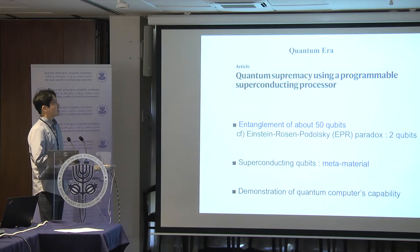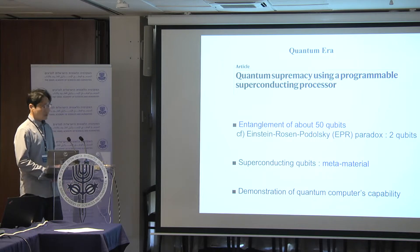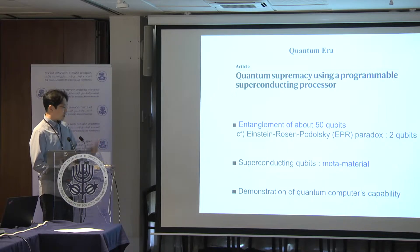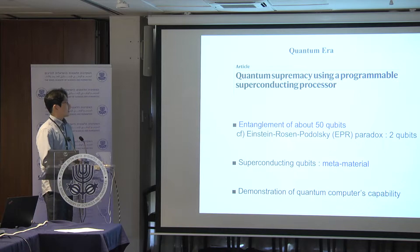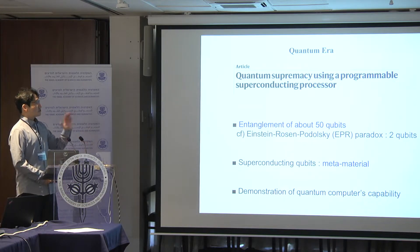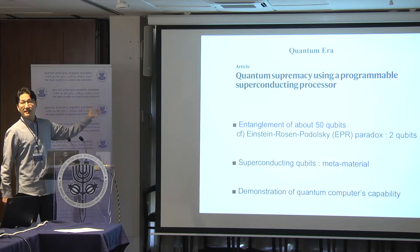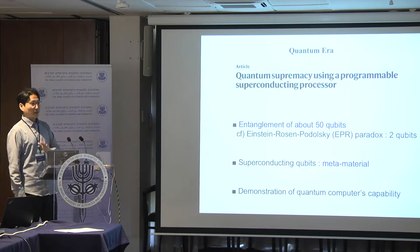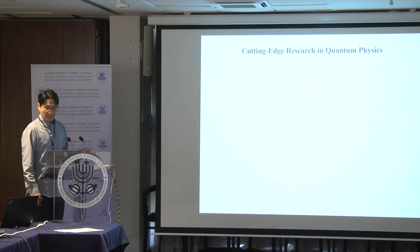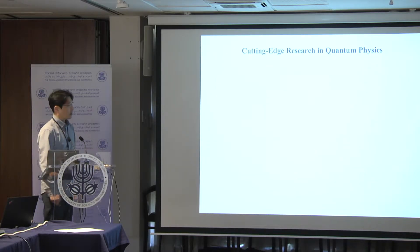The significance of this work is that they demonstrate quantum computers can outperform classical computers for a specific problem — we call this quantum supremacy. After three years, since it was 2019, we can ask: where are we? I bring two examples of cutting-edge research in quantum physics.